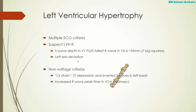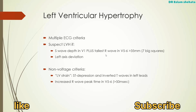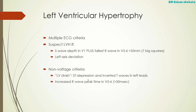Left axis deviation in the presence of tall QRS complexes would also point you towards left ventricular hypertrophy. There are also some non-voltage criteria: if you see that left ventricular strain pattern of ST depression and T-wave inversion in the left-sided leads, that should make you think of hypertrophy. And if you have an increased R-wave peak time — the time from the start of the QRS complex to when the R-wave reaches its peak — if that's greater than 50ms in V5 or V6, that should also prompt you to think of left ventricular hypertrophy.